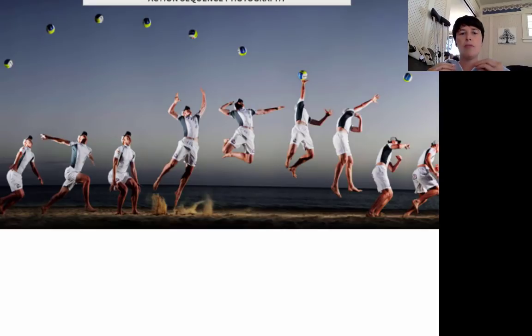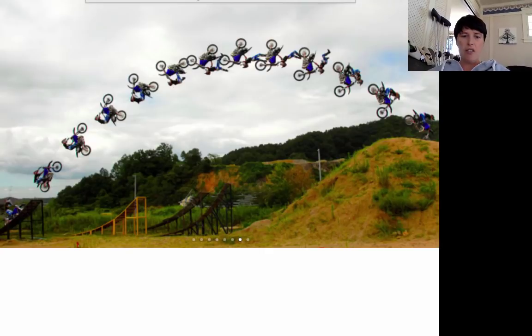And athletes really practice these sequences over and over and over again to get good at their sport. Because they want it to be completely natural when they're in the game or when they're competing. Here's another sequence of a motorbike doing a jump. This guy's going off a ramp, doing a flip in the air, and then landing on top of that hillside. And again, it's a sequence.